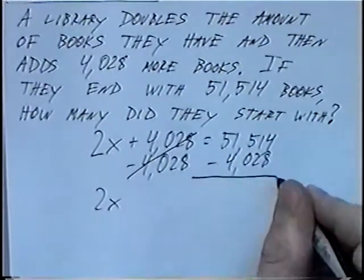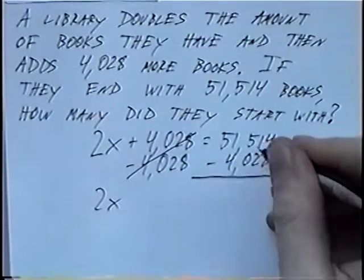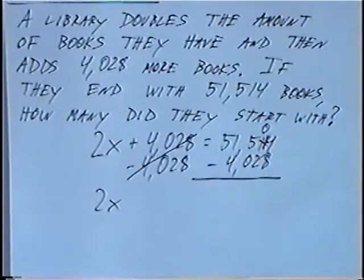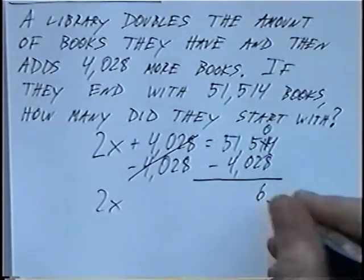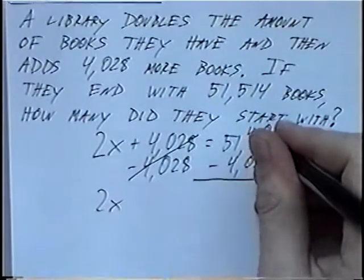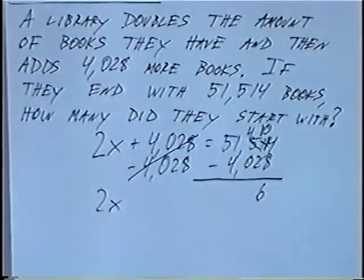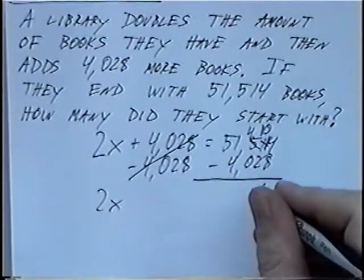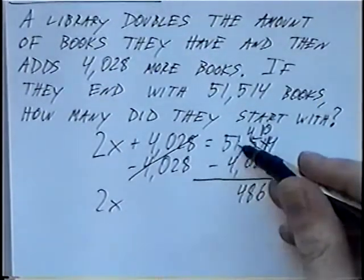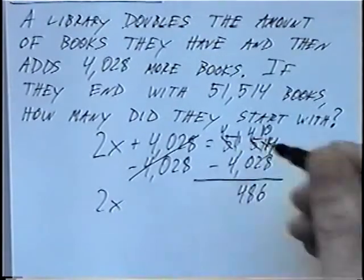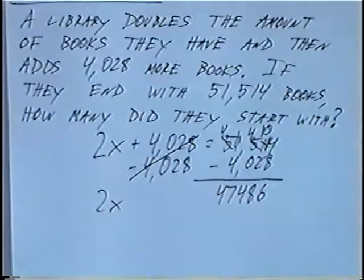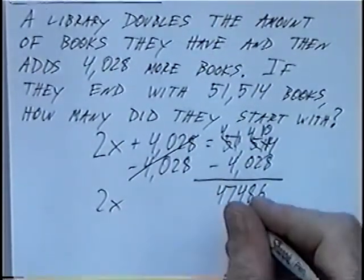And subtracting these numbers, 4 minus 8. We need to borrow from the next number. The 1 we can change to a 0, and the 4 we can change to a 14. So 14 minus 8 would be 6. 0 minus 2, again we'll have to borrow from the next number. The 5 we can change to a 4. And the 0 we can change to a 10. So 10 minus 2 would be 8. 4 minus 0 would be 4. 1 minus 4, again we can borrow from the next number. 11 minus 4 would be 7. And the 4 would come down. So after subtracting, we'd have 47,486.